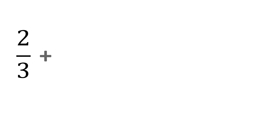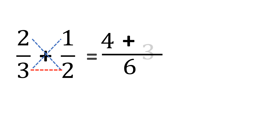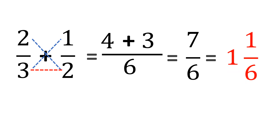Now let me show you the shortcut for adding fractions. Let us solve 2 thirds plus 1 half using the shortcut. First, multiply the denominators: 3 times 2 is 6. Then cross-multiply: 2 times 2 is 4, plus 3 times 1 is 3. Combining gives 7 sixths. Then change it to mixed form, which gives 1 and 1 sixth. That's how fast it is.